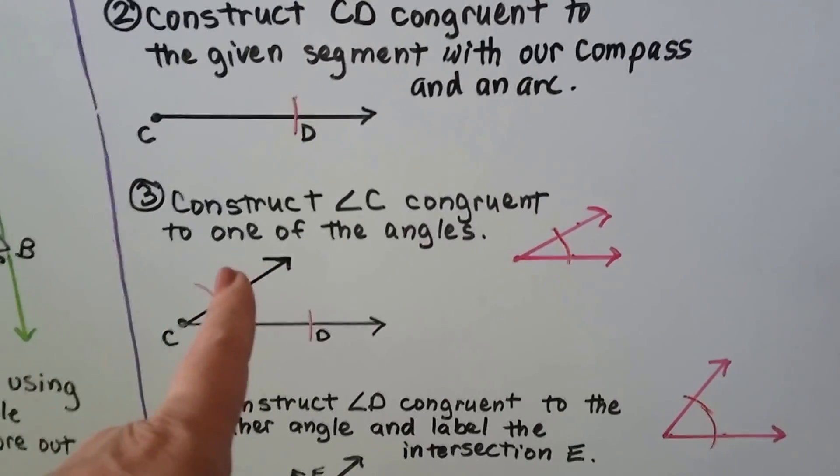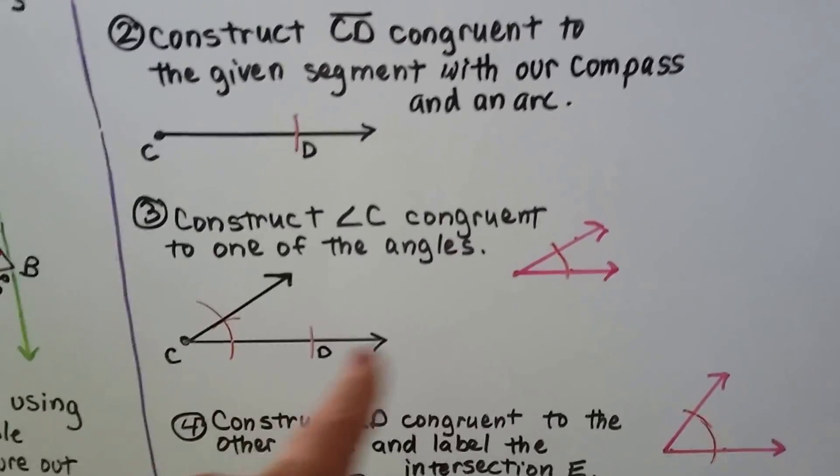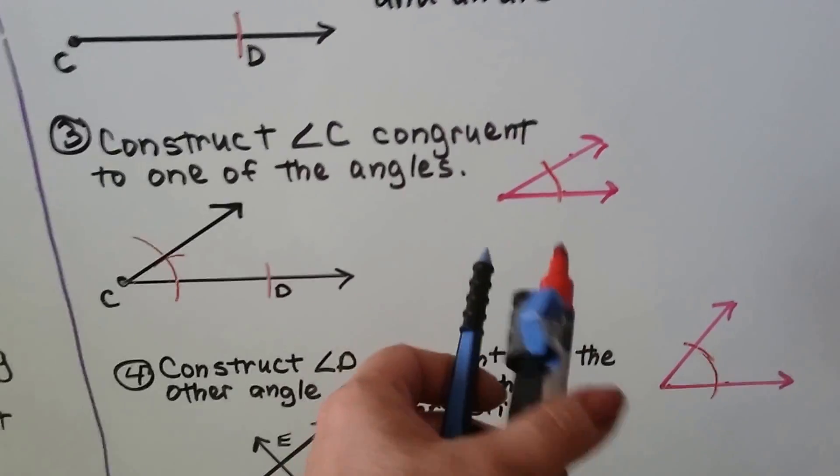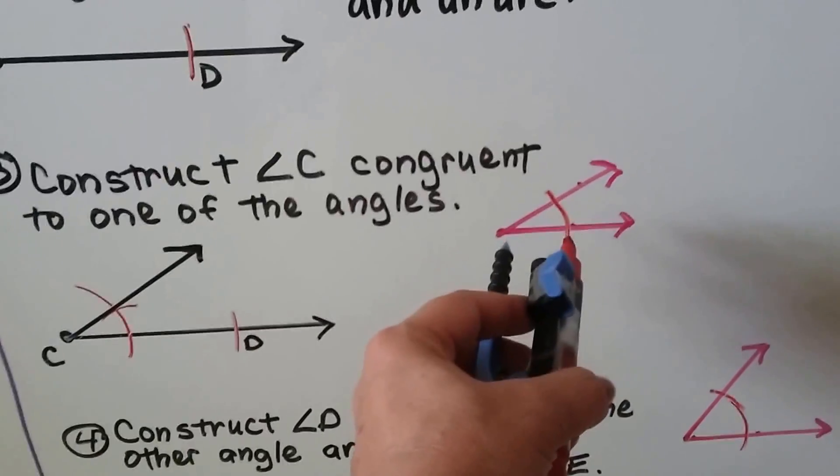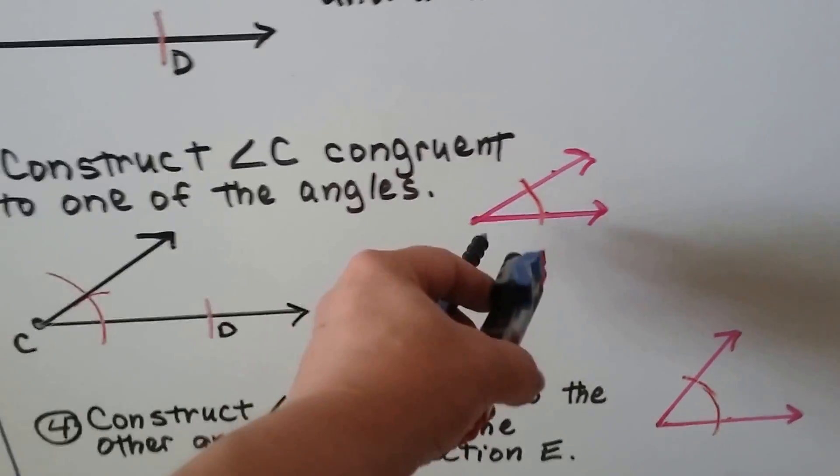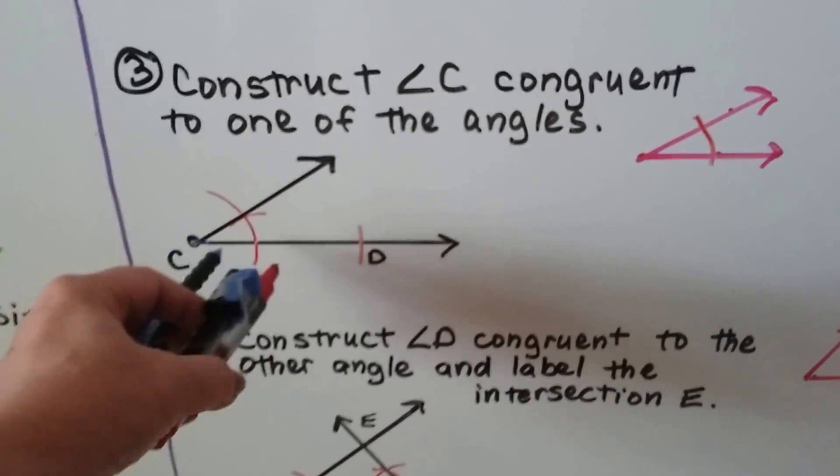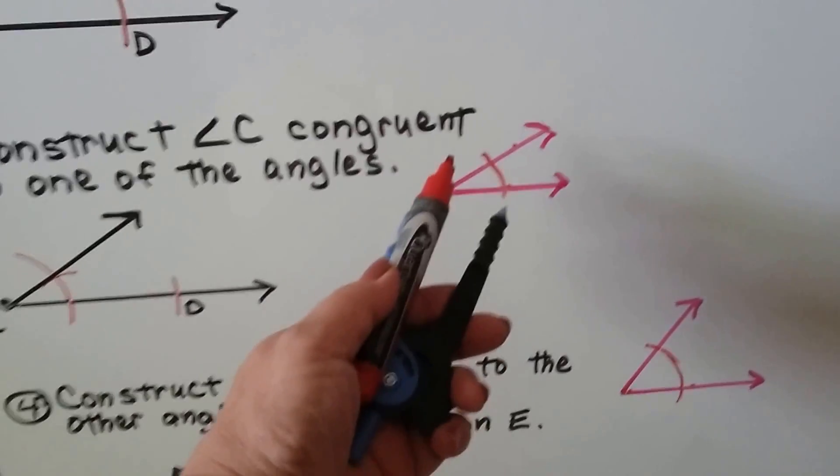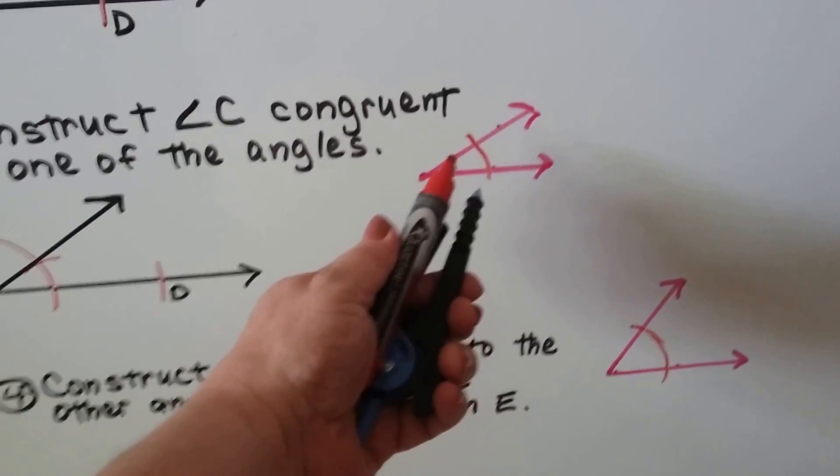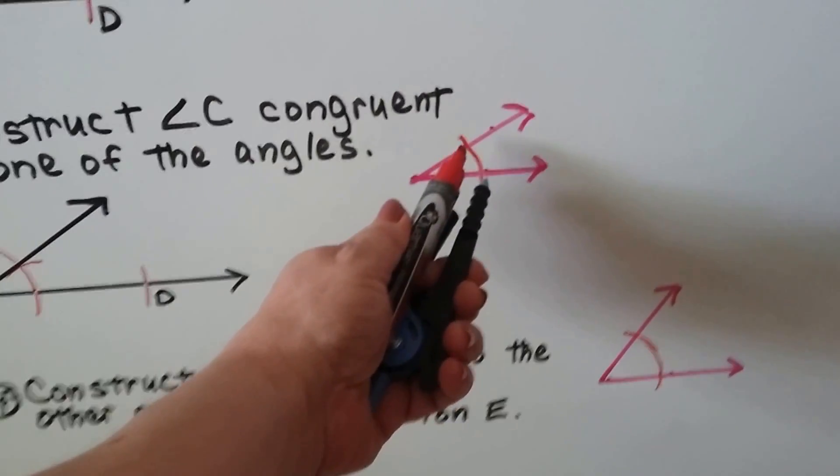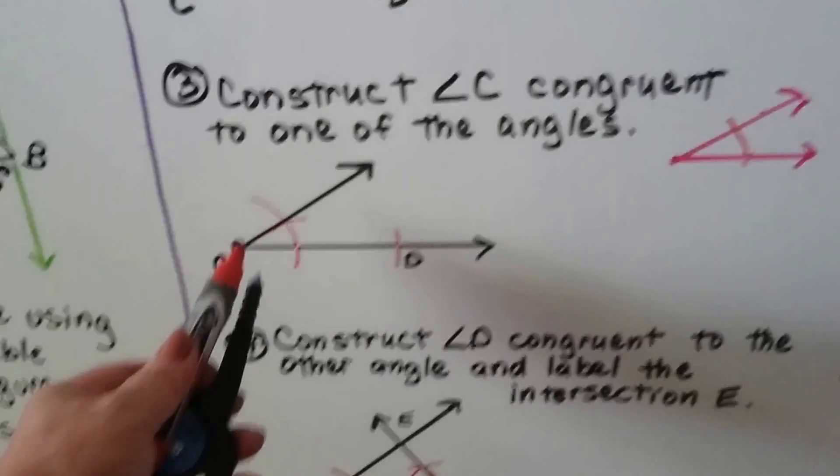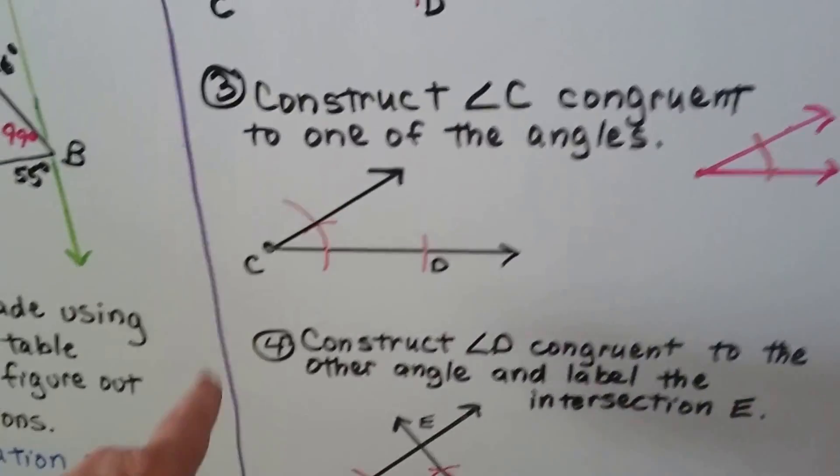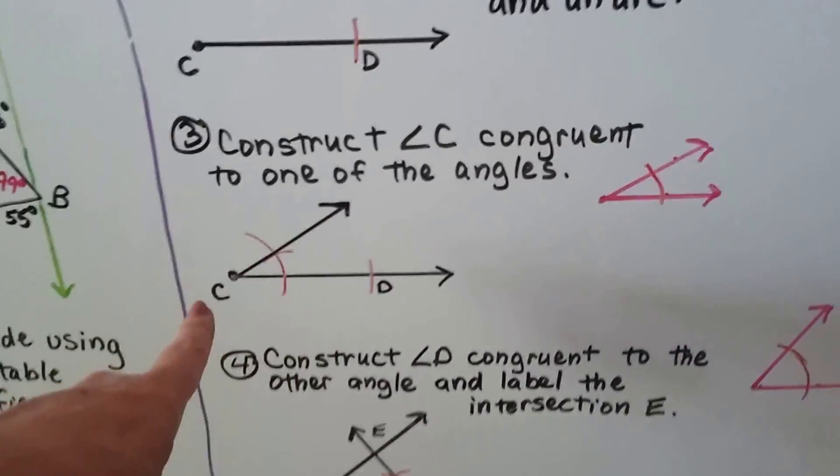Now we need to construct angle C congruent to one of the angles. First, I make an arc on the original angle. Then I make an arc on our ray. Then I take the compass and squeeze it to the distance between the arc intersections on the original. I come over here, put the point here, and make an arc. Now I take a straight edge from C through that intersection and I've made that angle.